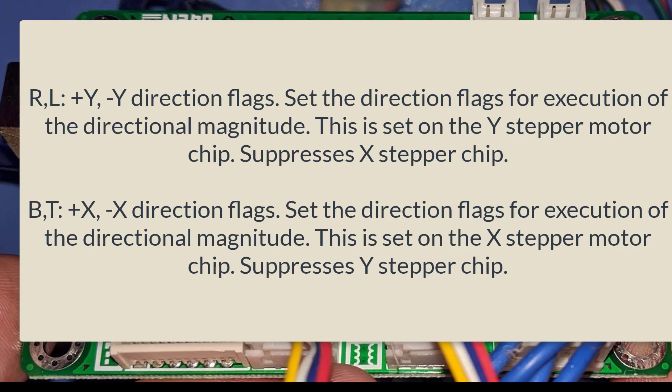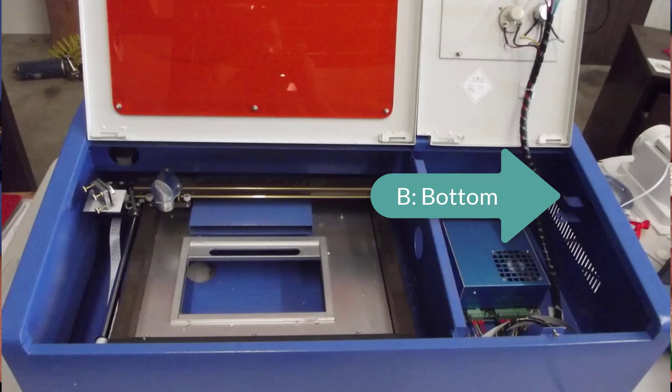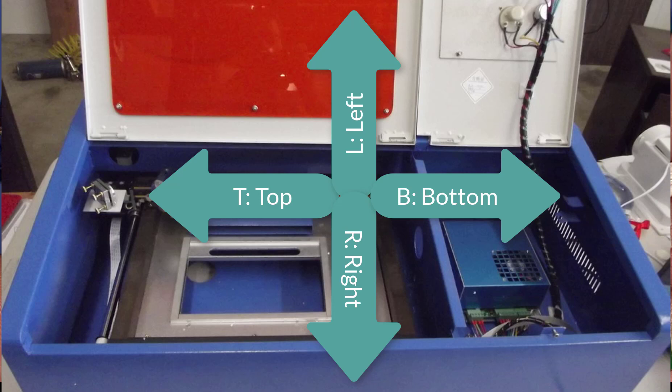The direction flags are RL and BT, which set the plus-Y and minus-Y direction flags. They set the stepper chip in either the forward or backwards position for both the X stepper motor chip and the Y stepper motor chip. Setting the RL flags suppresses the X stepper motor chip, and setting the BT flags suppresses the Y stepper motor chip, sending ticks only to the selected stepper. One oddity: L, R, T, and B might seem like left, right, top, and bottom, but all these directions are wrong unless you picture yourself lying underneath the laser with your head at mirror two and your feet at the controller board.